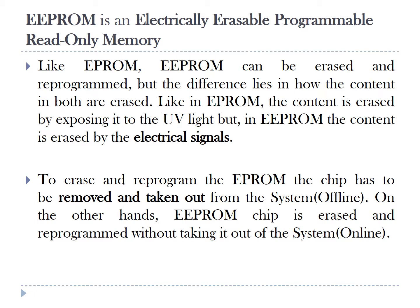EEPROM is an electrically erasable programmable read-only memory. Like EPROM, EEPROM can be erased and reprogrammed, but the difference lies in how the content is erased. In EPROM, the content is erased by exposing it to UV light, but in EEPROM, the content is erased by electrical signals.